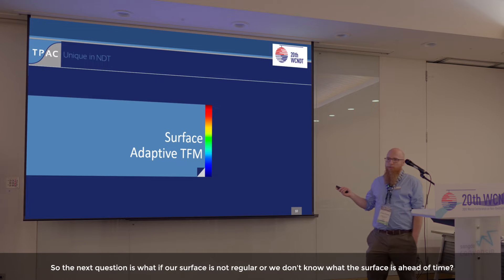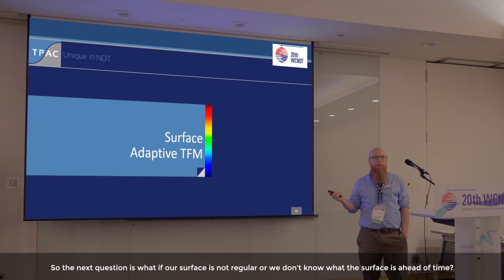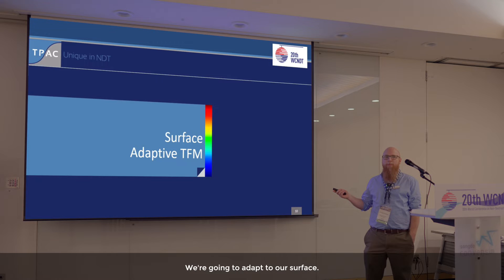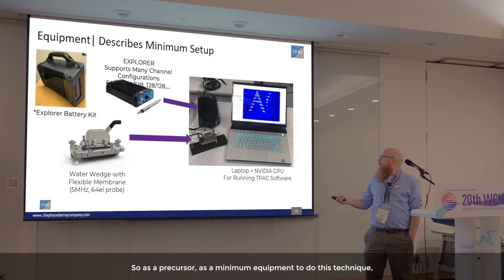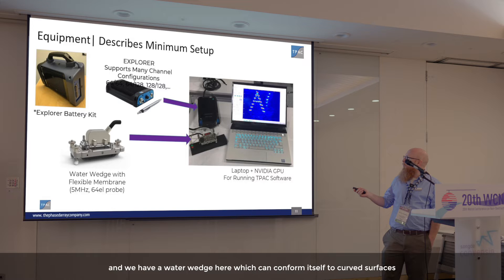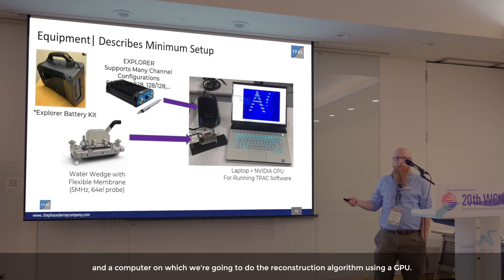The next question is: what if our surface is not regular, or we don't know what the surface is ahead of time? We need to compensate for that and adapt to our surface. As a minimum equipment setup for this technique, we would need a hardware component for pulsing and receiving such as an Explorer, a probe, a water wedge that can conform itself to curved surfaces, and a computer on which we do the reconstruction algorithm using a GPU.